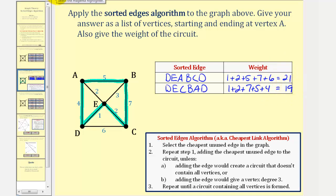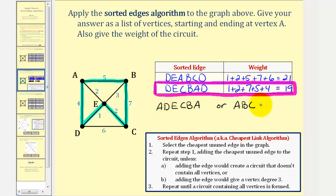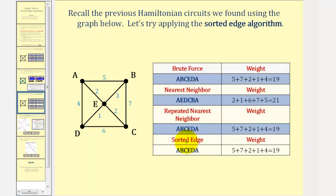So of course, we would use the circuit with the least weight, the second circuit here. But looking back at the directions, it does ask us to give the circuit starting with vertex A. So let's rewrite this: we'd write the circuit starting at A as A, D, E, C, B, A. We could also give this in the reverse order as a duplicate circuit: A, B, C, E, D, A. Notice how the sorted edges algorithm did give us the optimal or lowest cost Hamiltonian circuit, but we should recognize this may not always be the case.